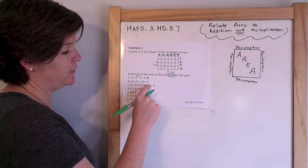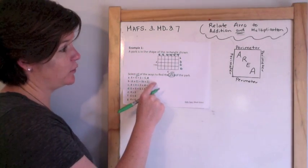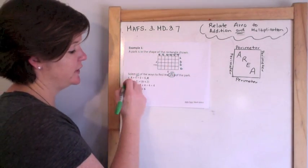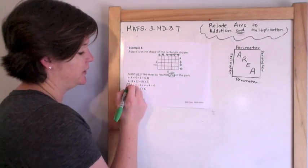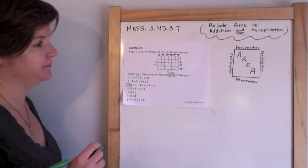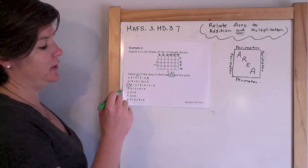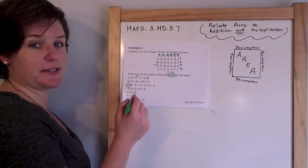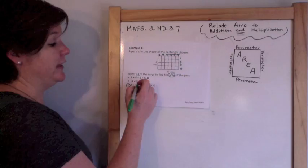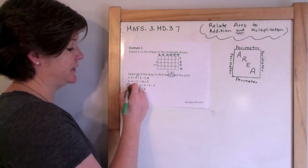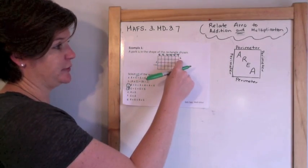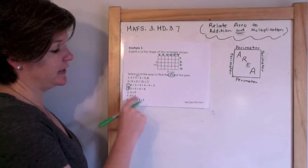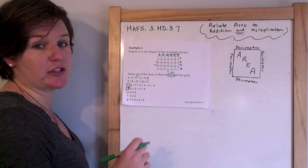Four plus four plus four plus four plus four plus four — that would be six fours, which is a correct answer. And six plus six plus six plus six is also a correct answer. And now I'm getting into multiplication.